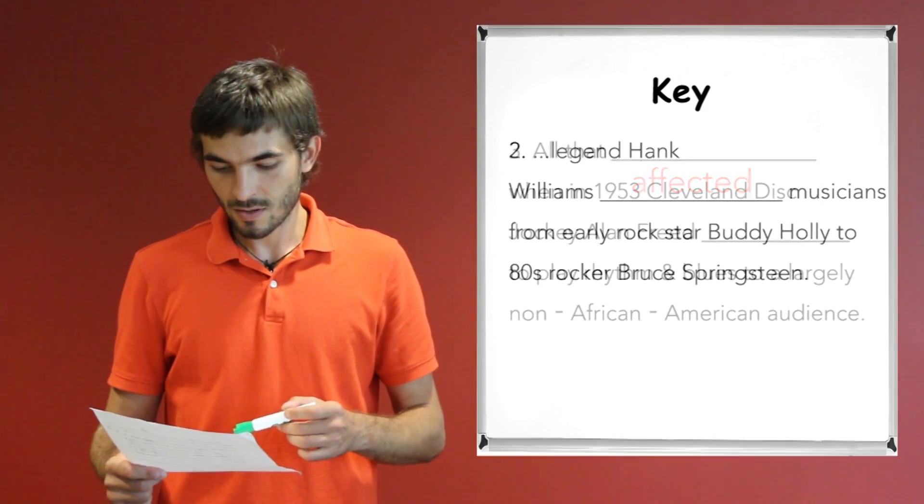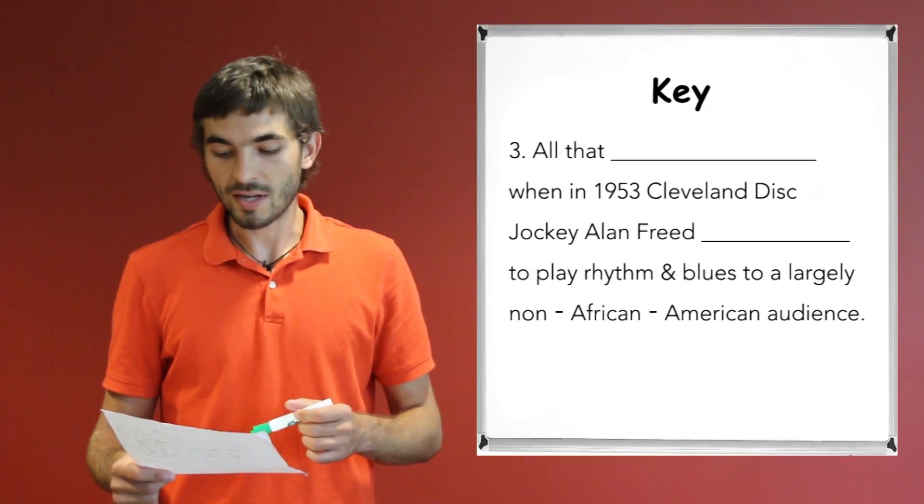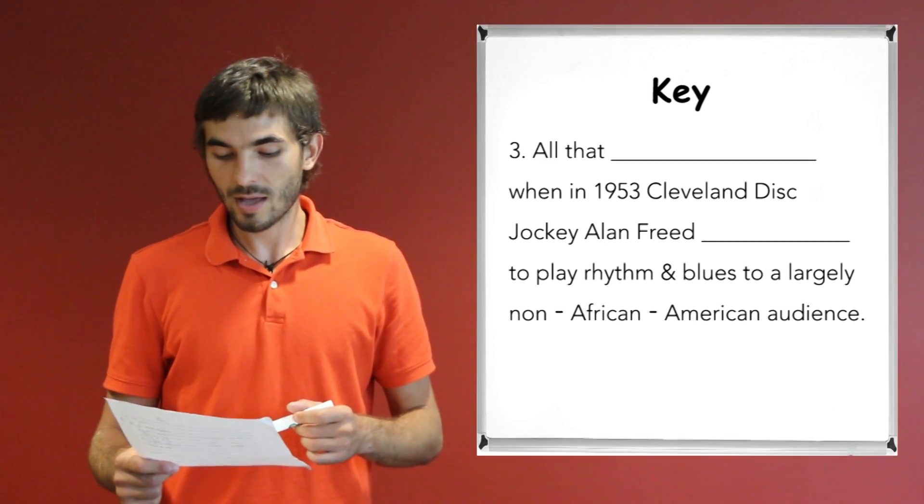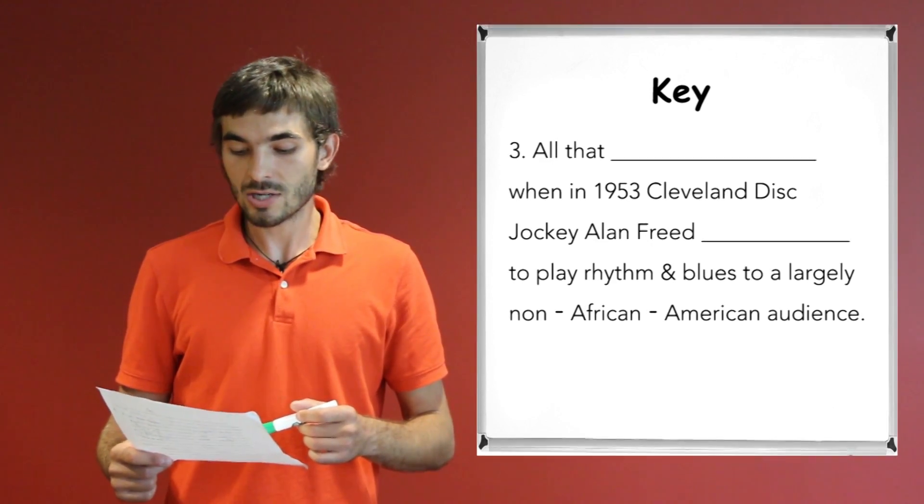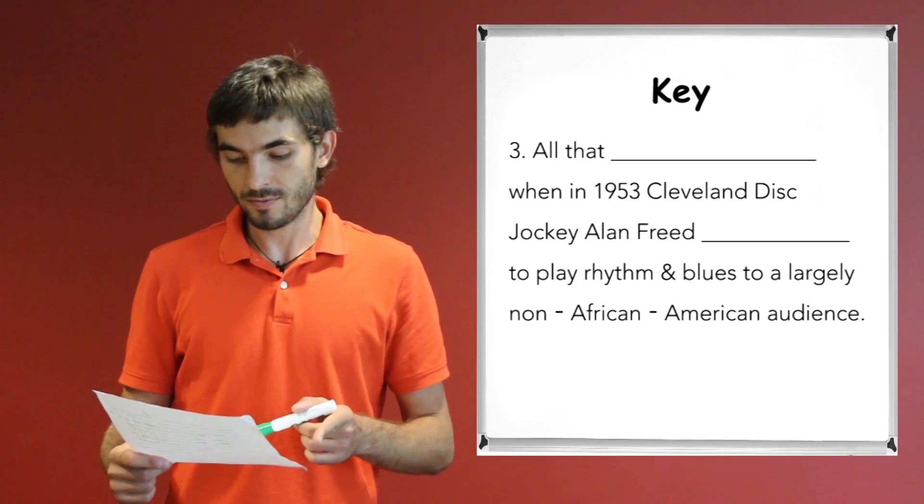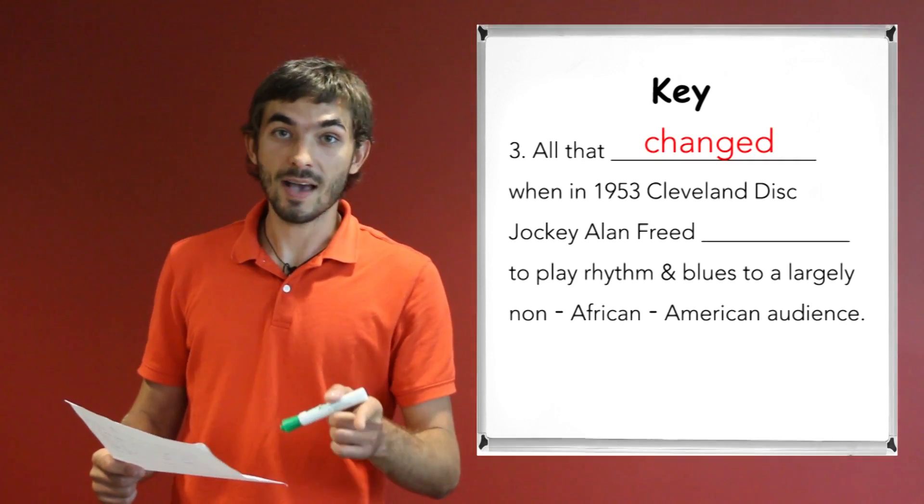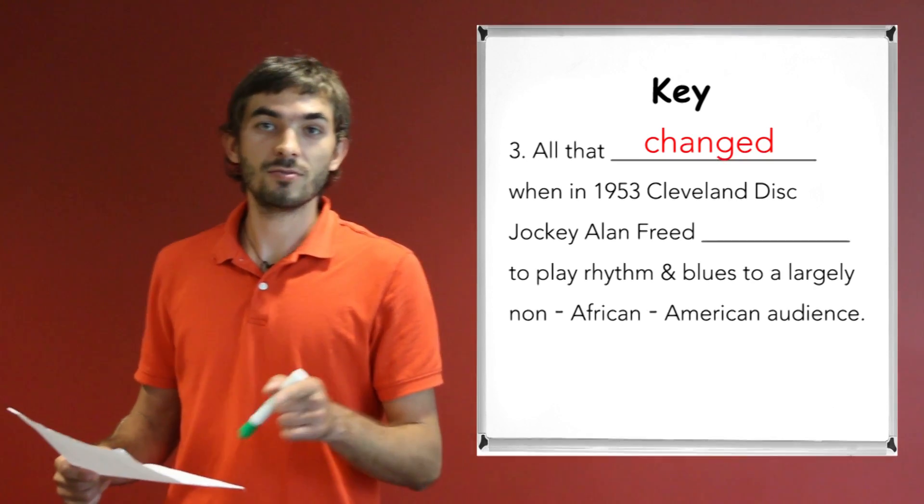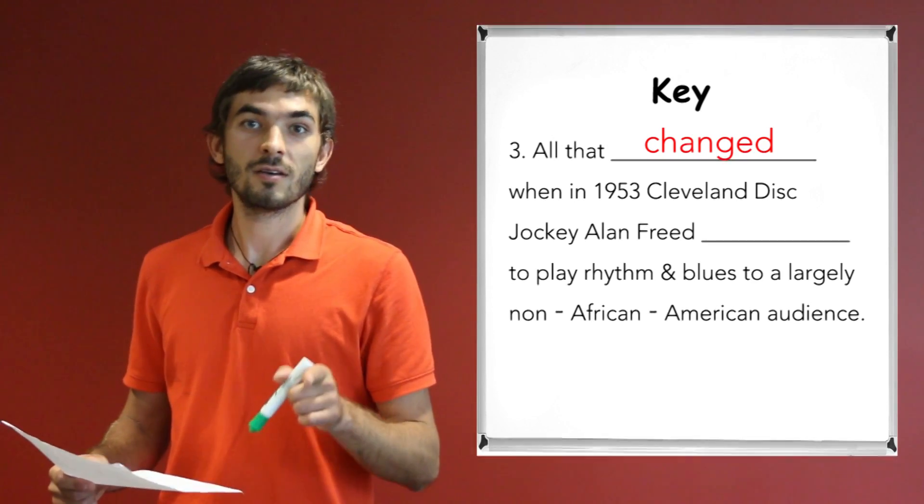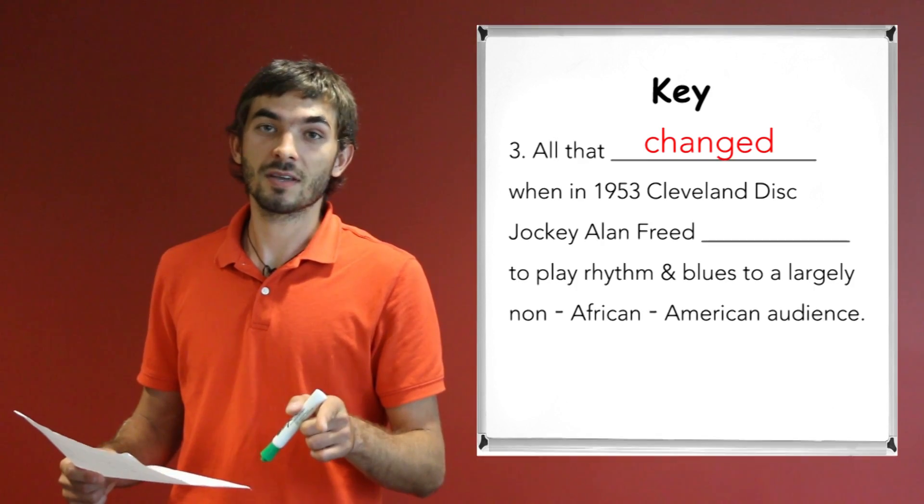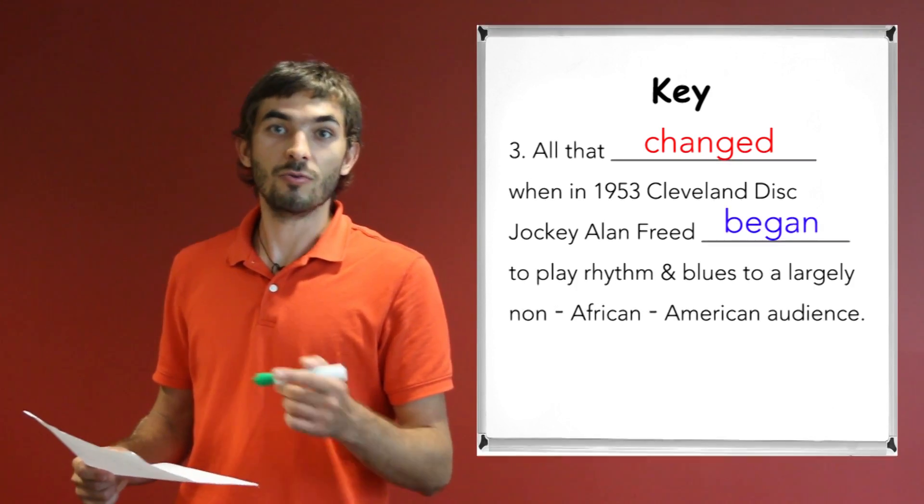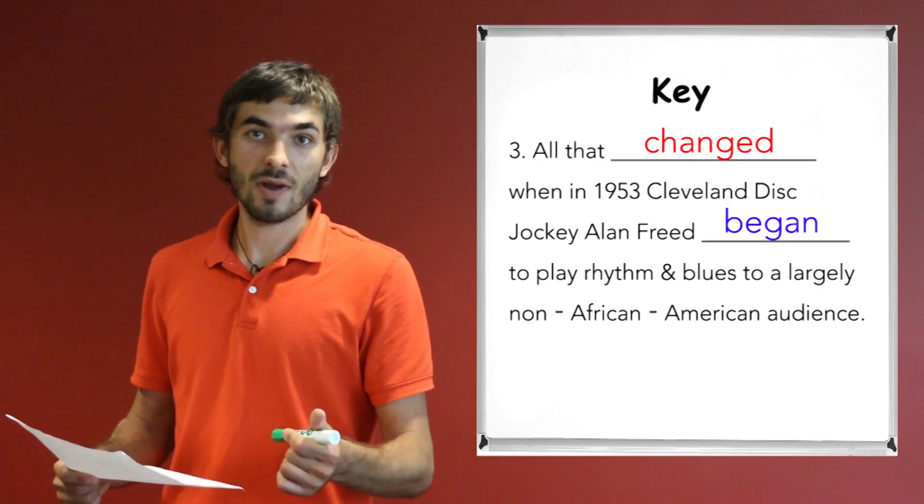Let's see another sentence. All that changed when in 1953, Cleveland DJ Alan Freed began to play rhythm and blues to a largely non-African American audience. So all that changed. Yes, the first verb is regular or irregular. Correct, regular. And the second missing is began. So tell me, is it irregular or regular? Irregular, that's correct.